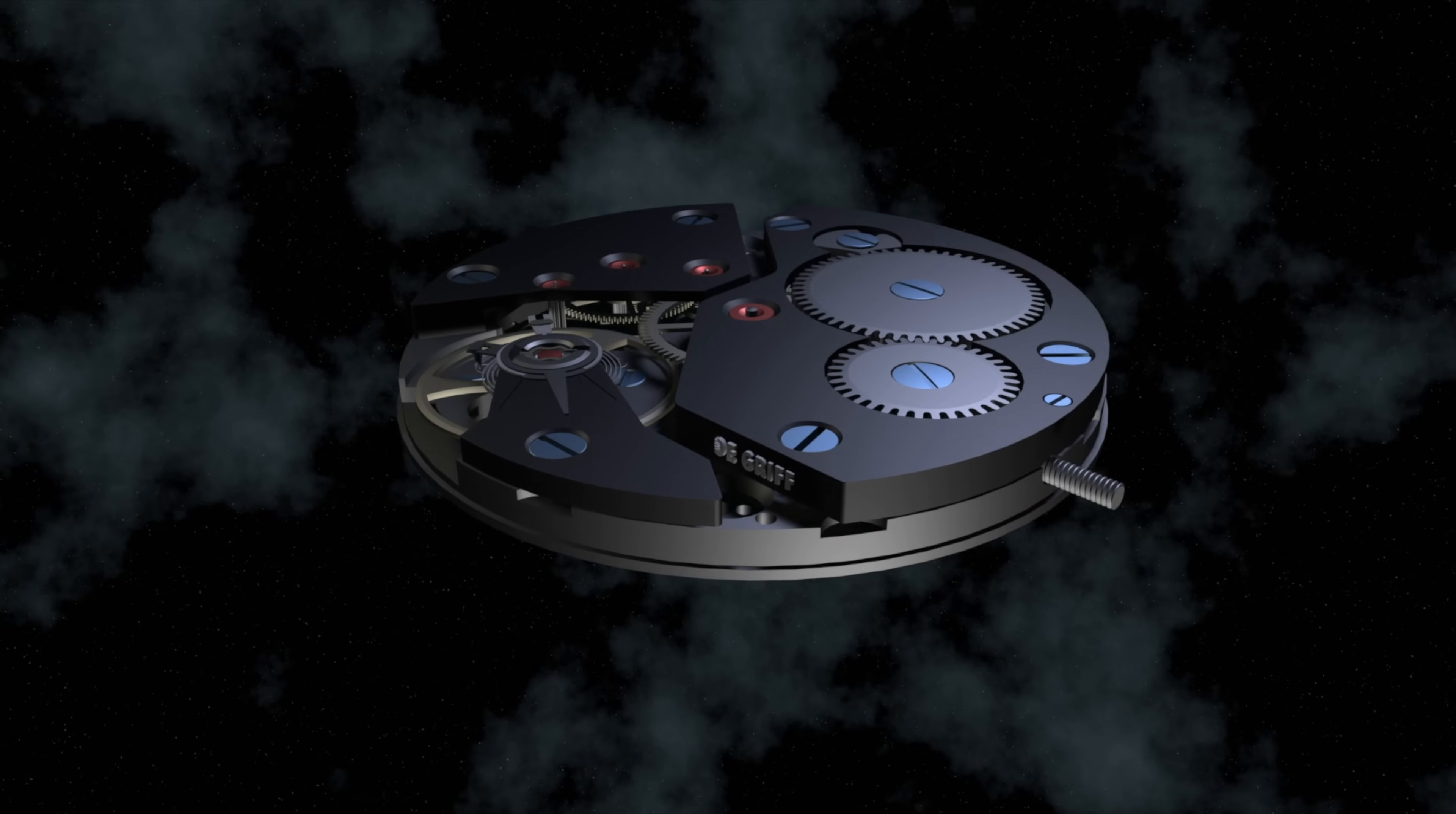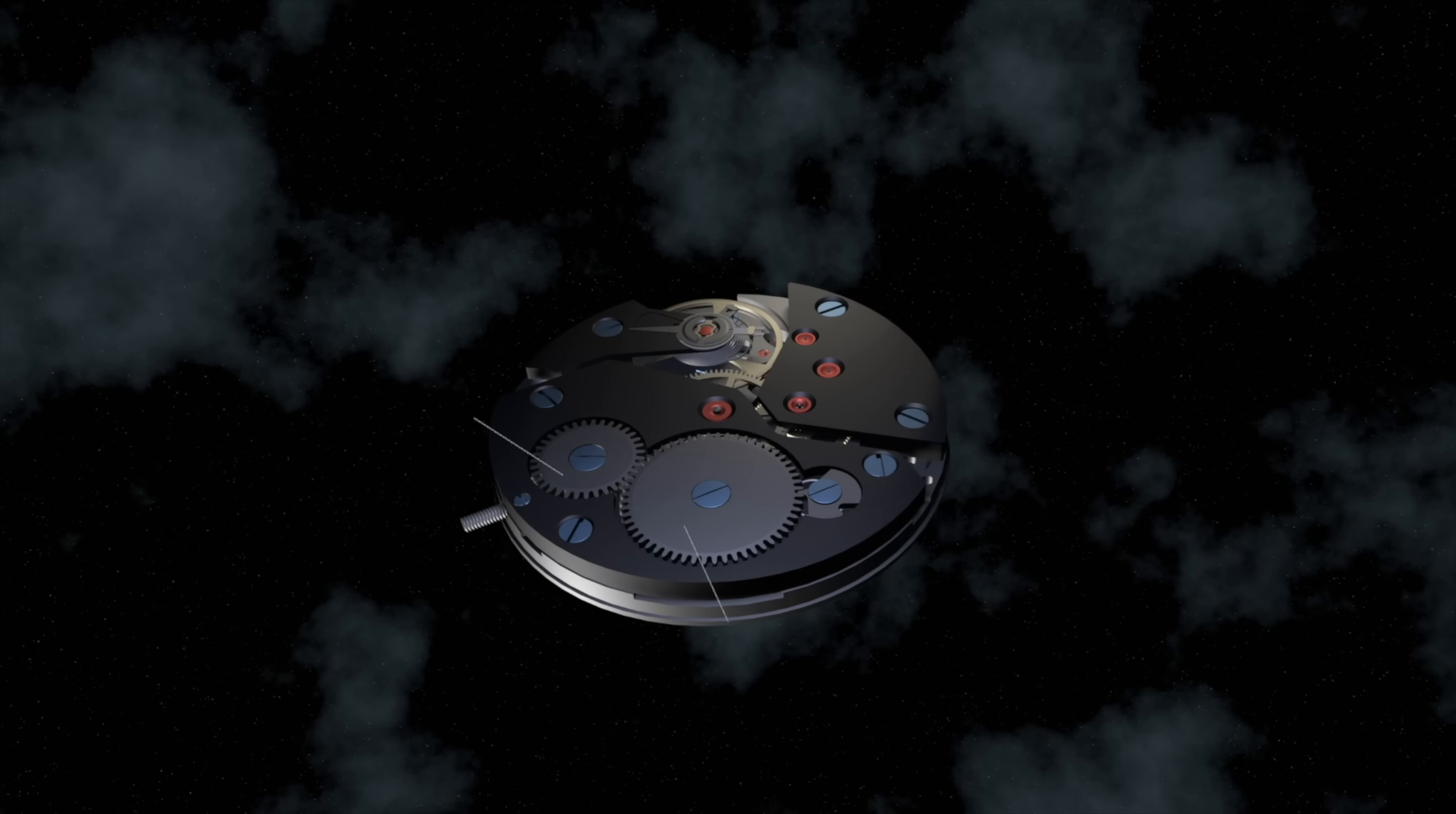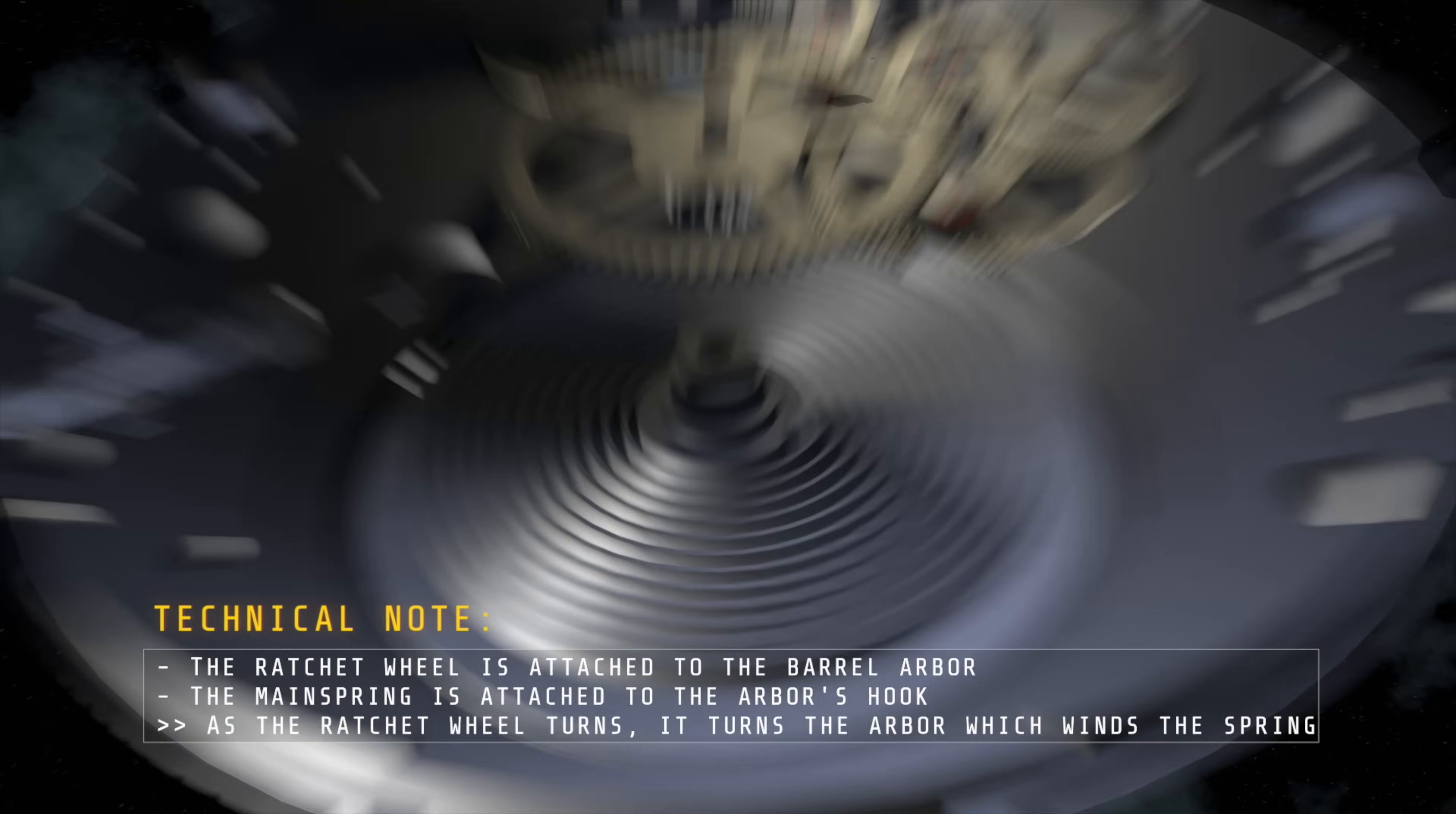We create energy by winding the watch. Now as this is a manual winding watch, we do that by turning the crown, which rotates the stem. This then rotates the crown wheel, which turns the ratchet wheel. Now the ratchet wheel sits on top of the barrel, which houses the all-important mainspring. As you wind your watch, you are turning the ratchet wheel which coils the mainspring. Winding the watch essentially means tightening the coil of that mainspring.